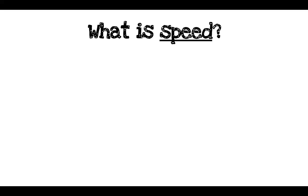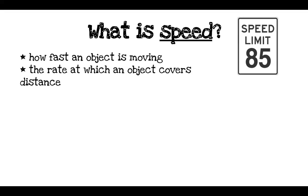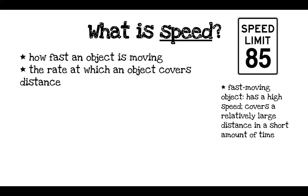So what is speed? Speed is how fast an object is moving. We can also say it's the rate at which an object covers distance. A fast-moving object — say a car moving 85 miles per hour — is an object that has a high speed, so it covers a relatively large distance in a short amount of time.